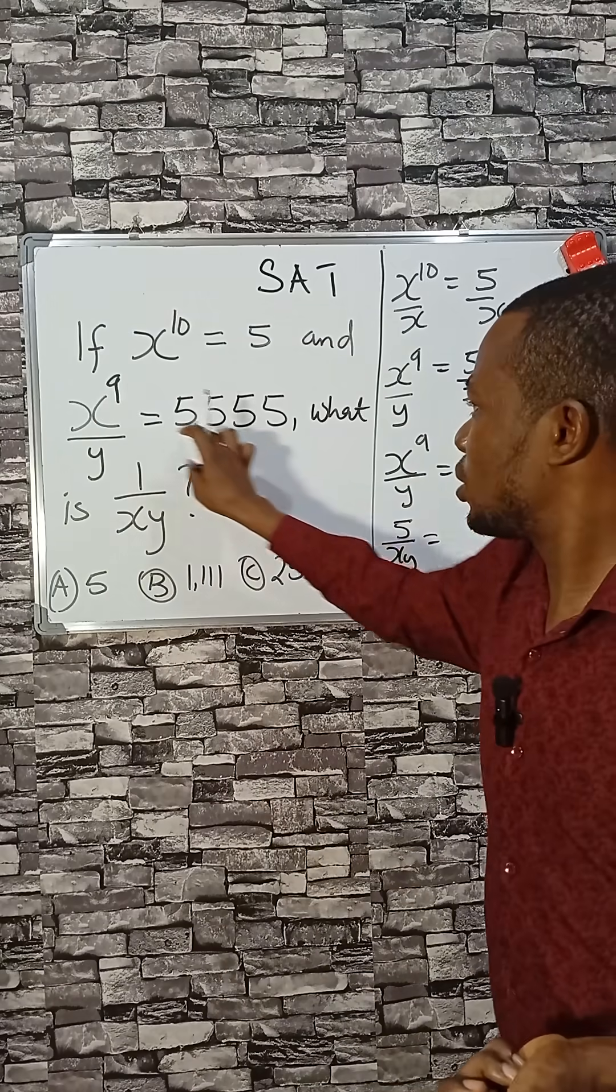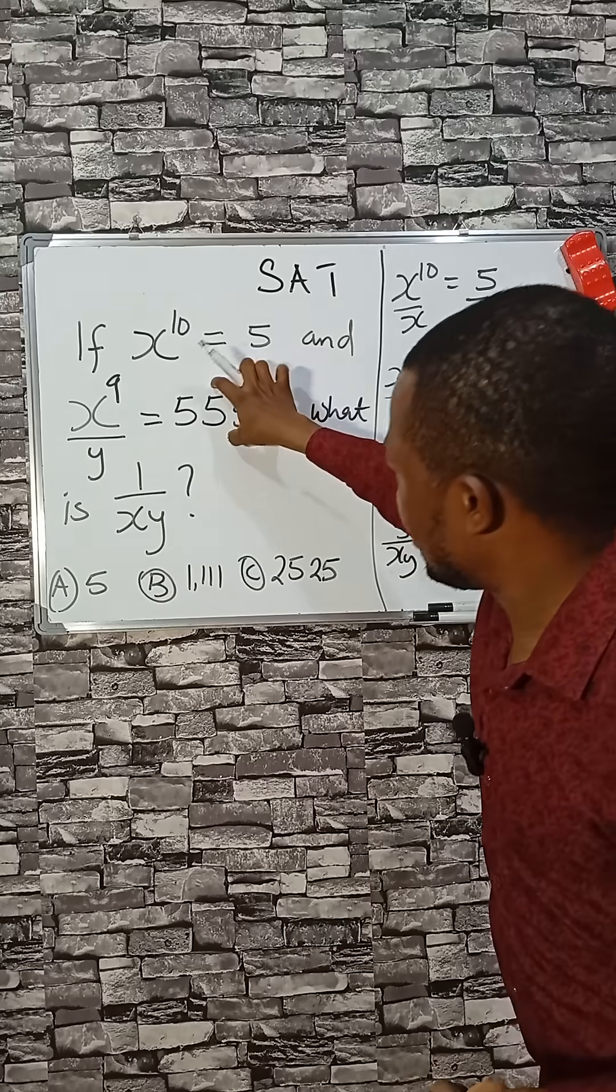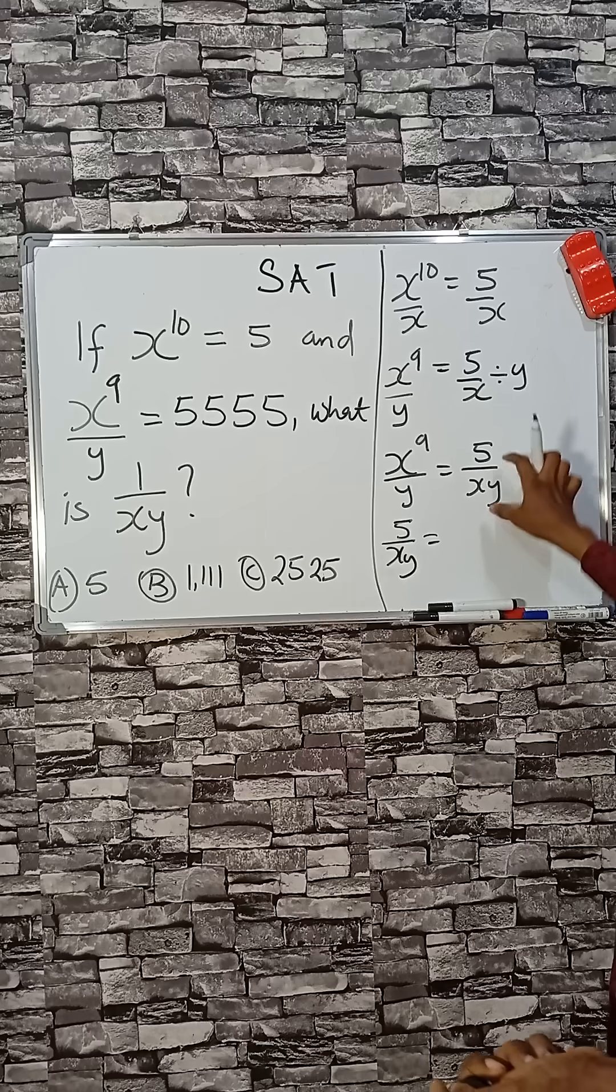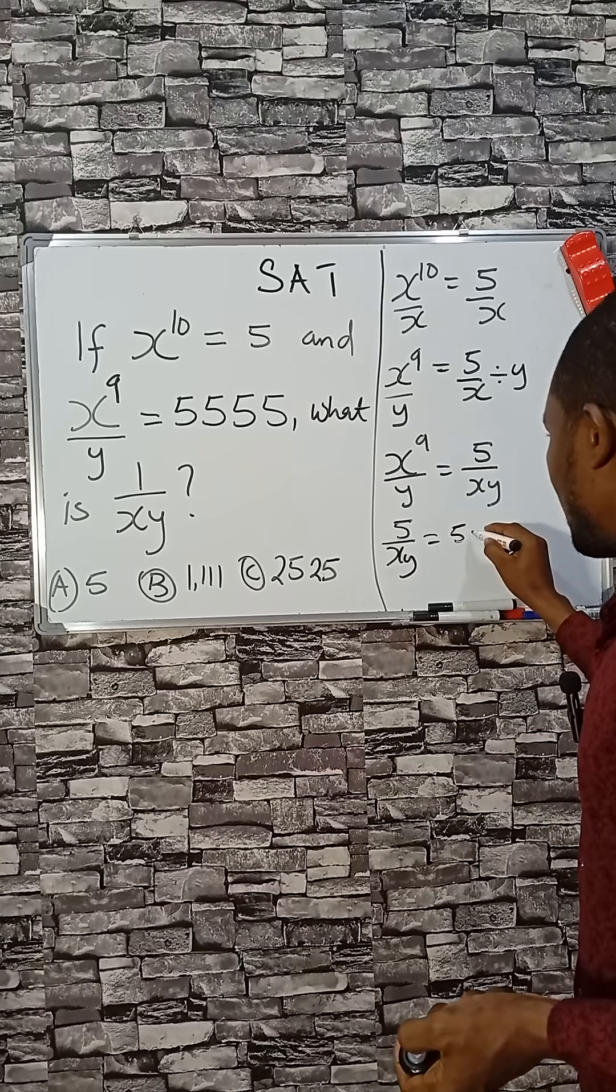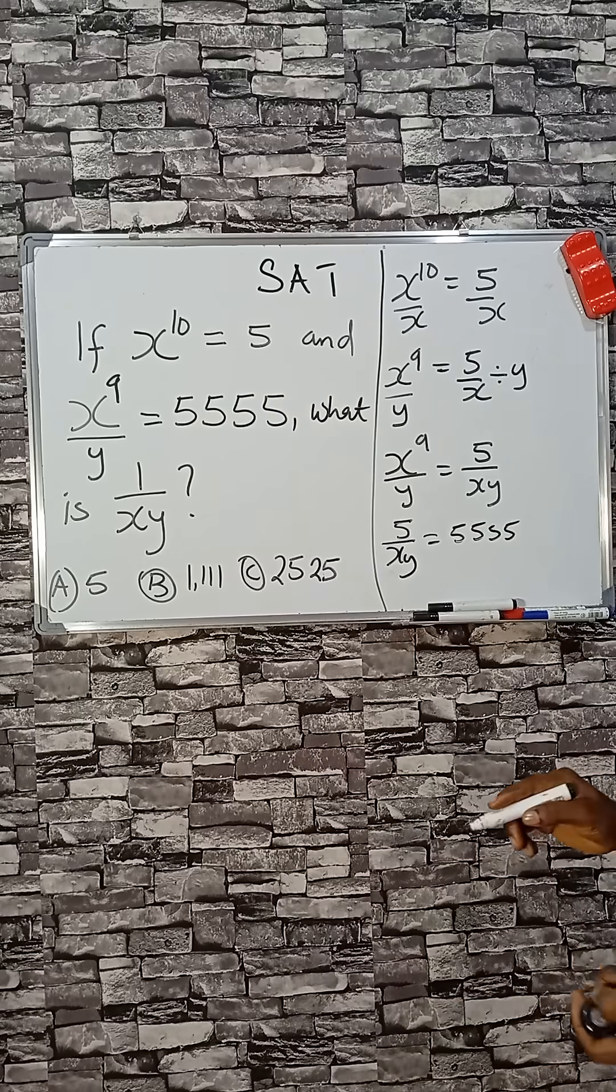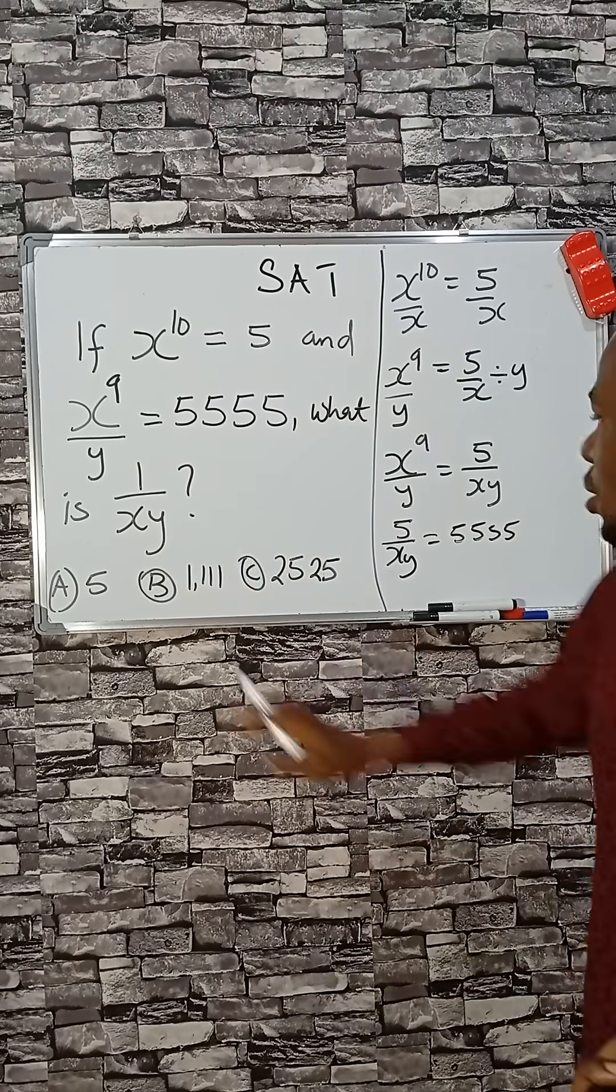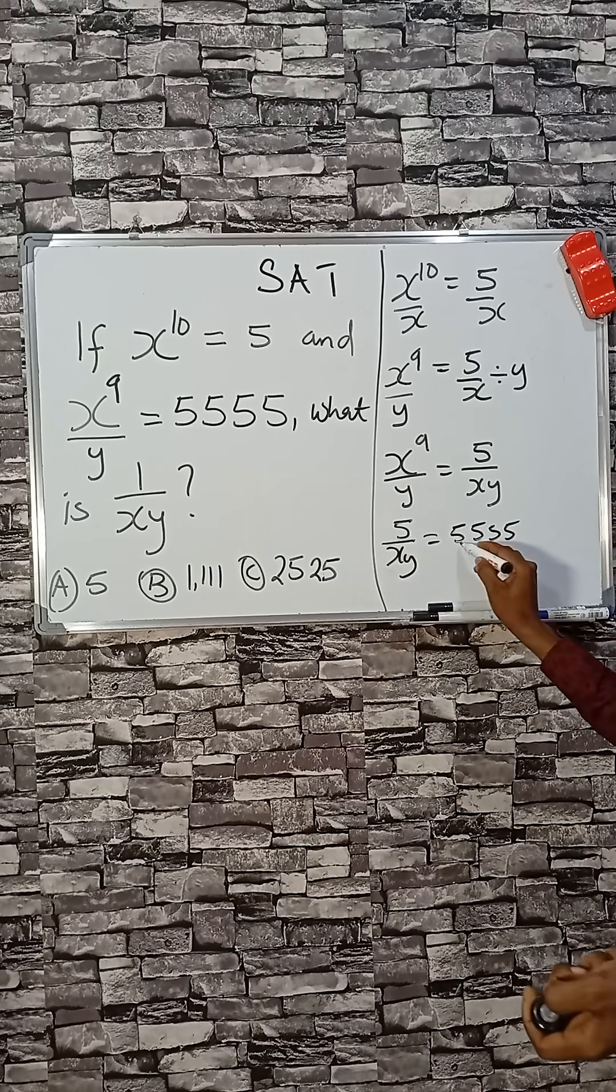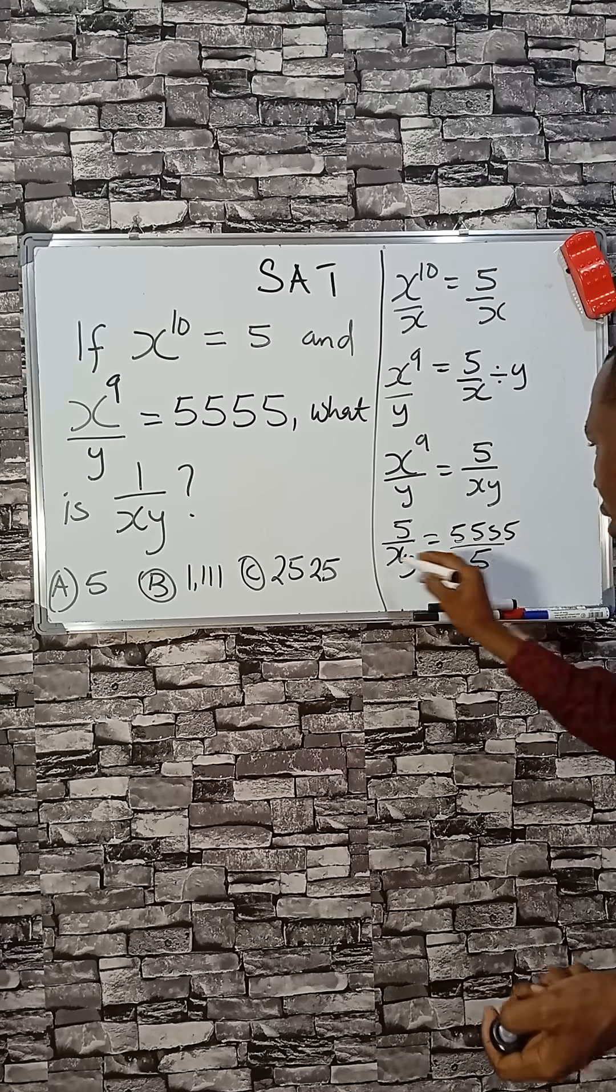And from here, all that is equal to this. I'm taking this side for xy. Then from here, I'm taking this since we are told they are the same. Okay, then we are looking for 1 over xy. It's possible I can have 1 over xy from here if I divide both the left hand side and the right hand side by 5. Check closely, you divide by 5.